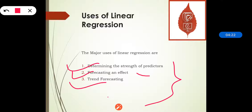These are the major uses of linear regression: determining the strength of predictors, applicable in marketing and share markets; forecasting an effect, such as predicting additional sales income; and trend forecasting, such as predicting costs or trends after six months. This is all about multiple regression, which is the extension of linear regression. In our next section, we will continue with logistic regression. Thank you.